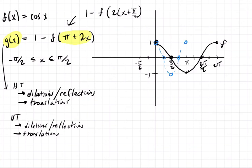And then next, we want to look at the translation. We're going left π over 2 radians. So this point is going to go here. This point is going to go here. This point here, this point here, and this point here. So now we have this function.